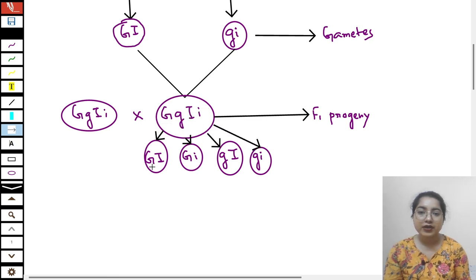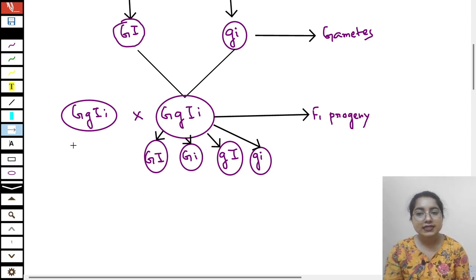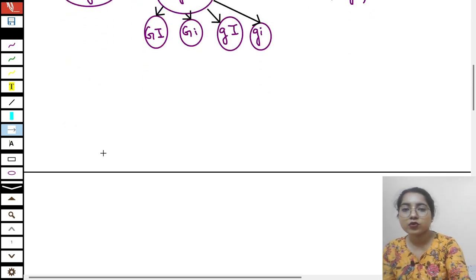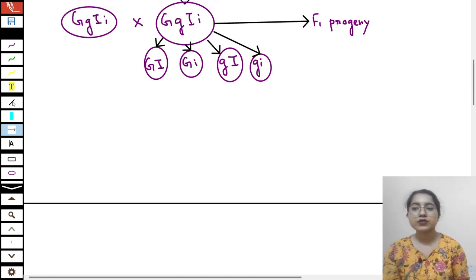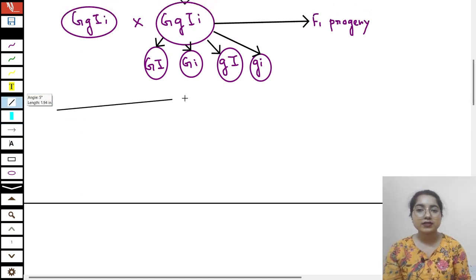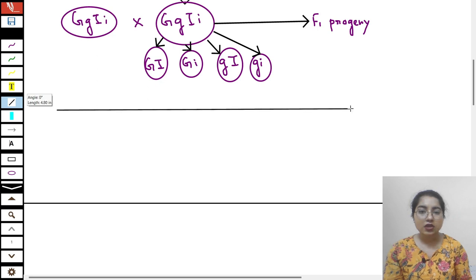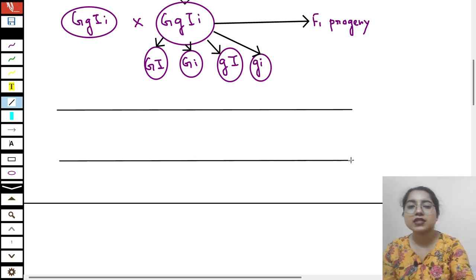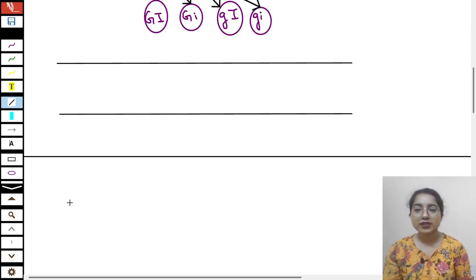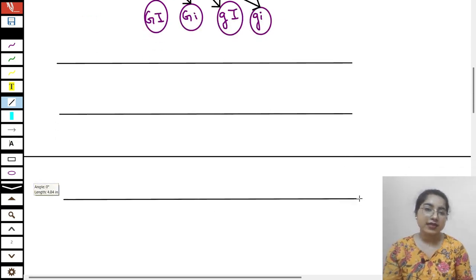So the gametes are: capital G capital I, capital G small i, small g capital I, and small g small i — same thing will happen here as well. Now we will make a Punnett square. Because otherwise how will we solve this? If we make a Punnett square, then we can find out the ratio.